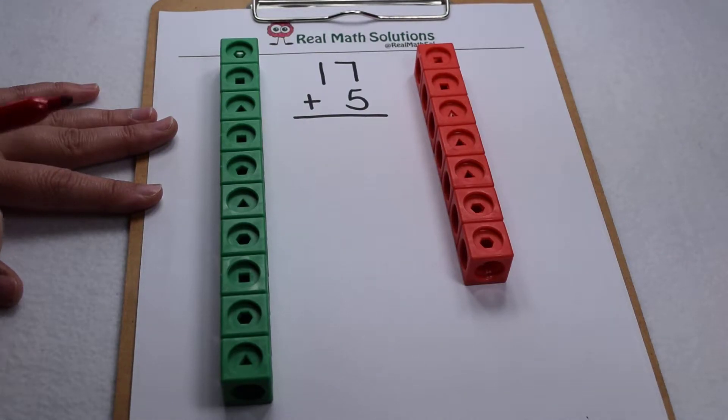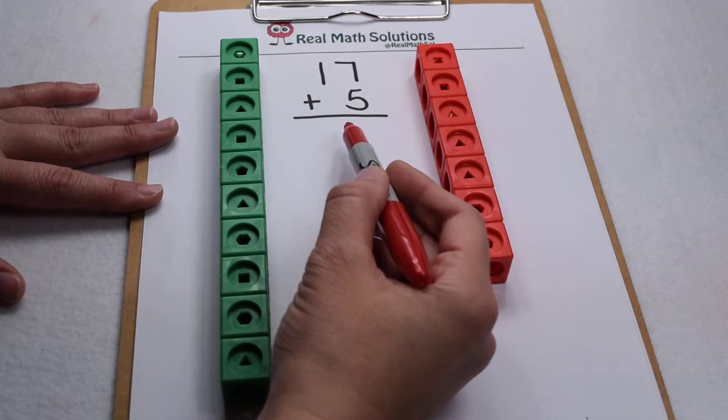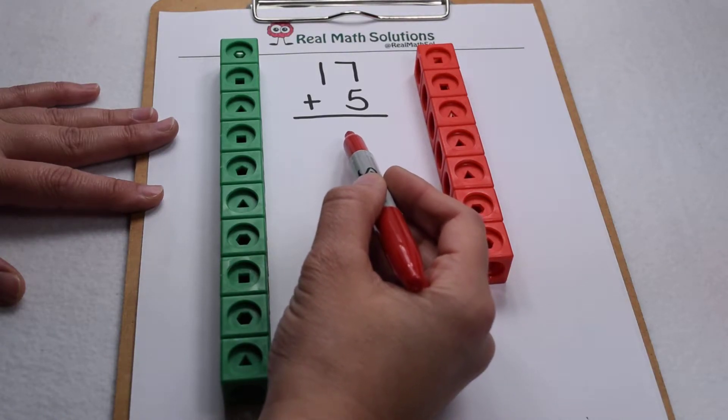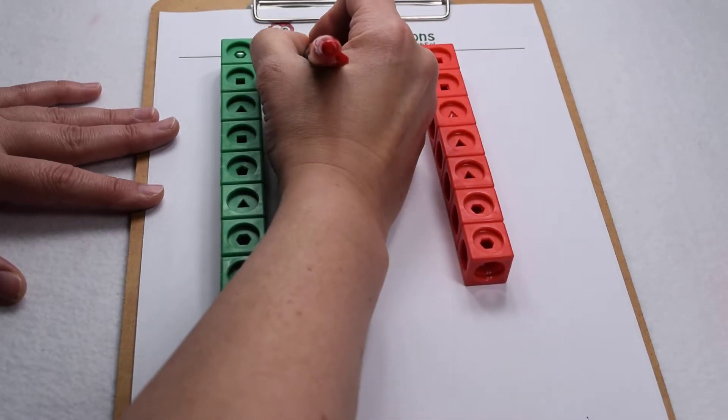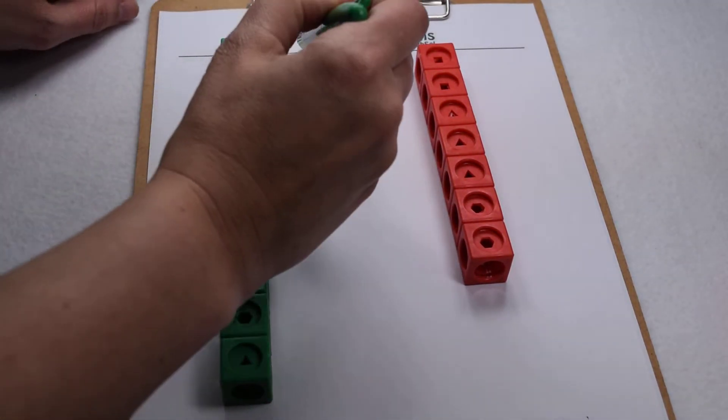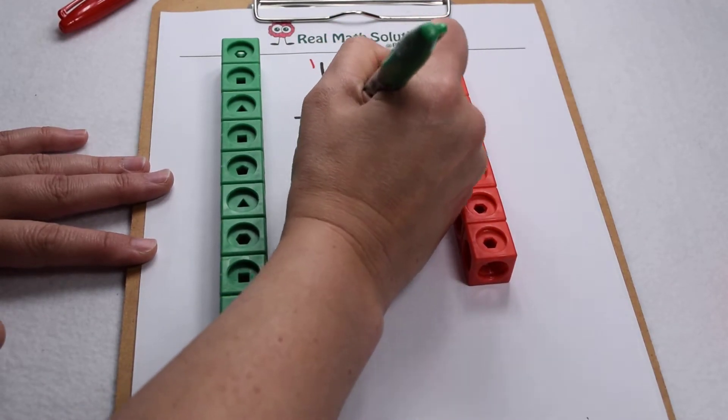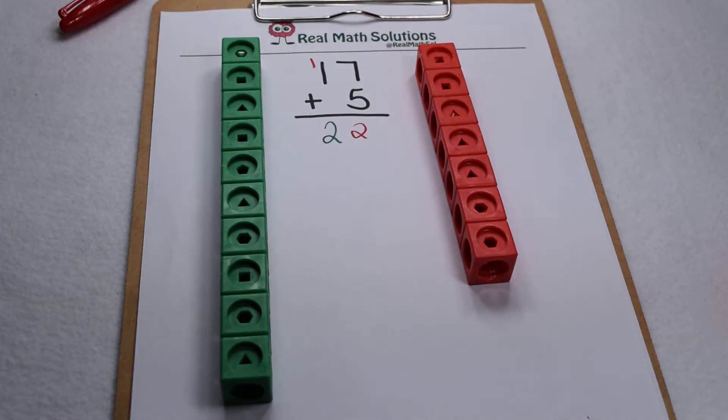Well, let's look at it here with 17 plus 5. If we simply add 17 plus 5 using the addition algorithm, 7 plus 5 is 12, put down my 2, carry my 1, and then my carried 1 plus 1 gives me 2, so that comes out to be 22.